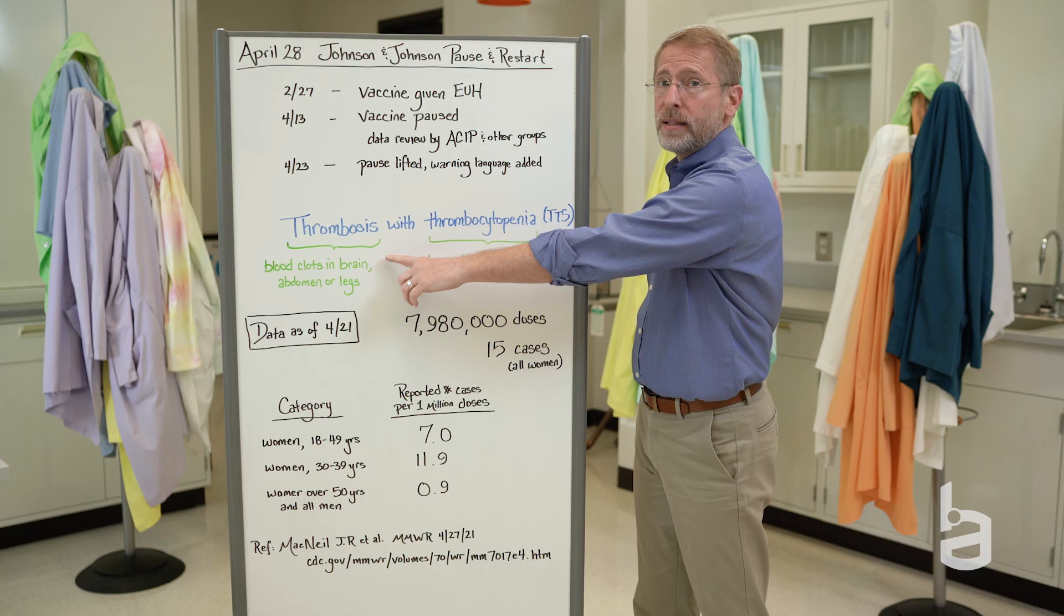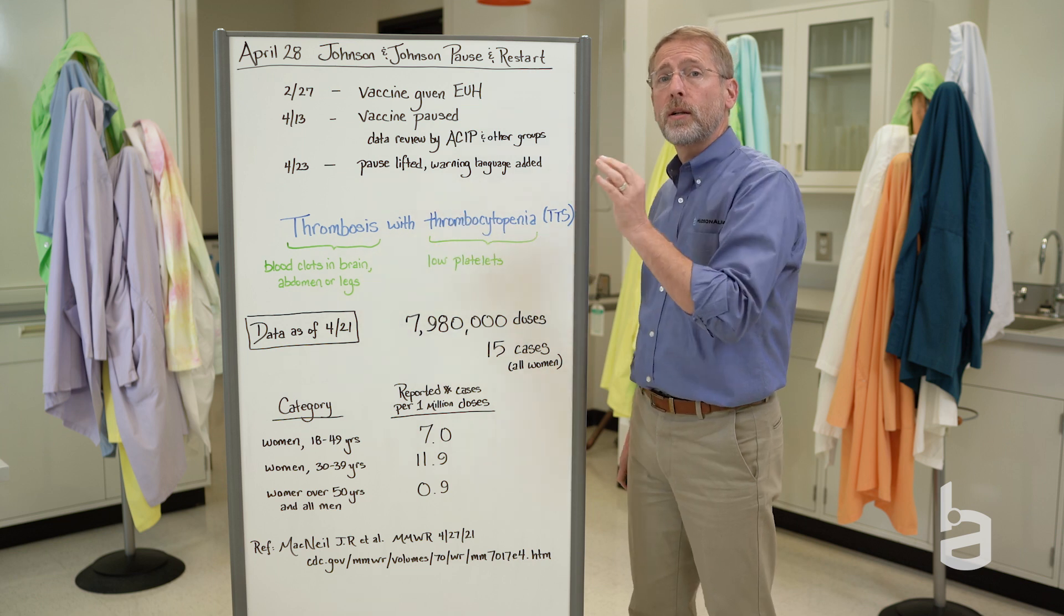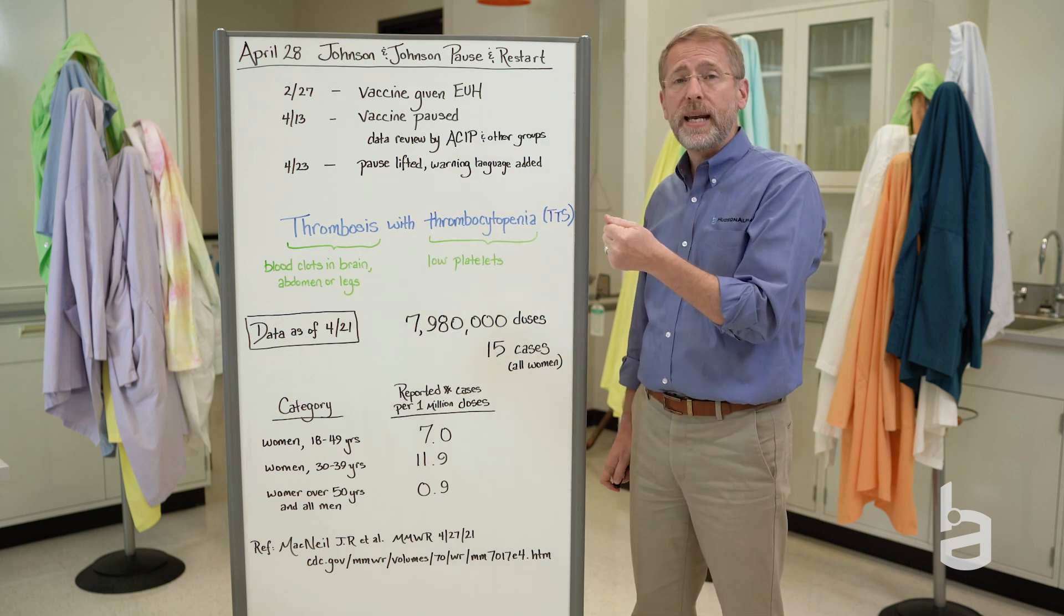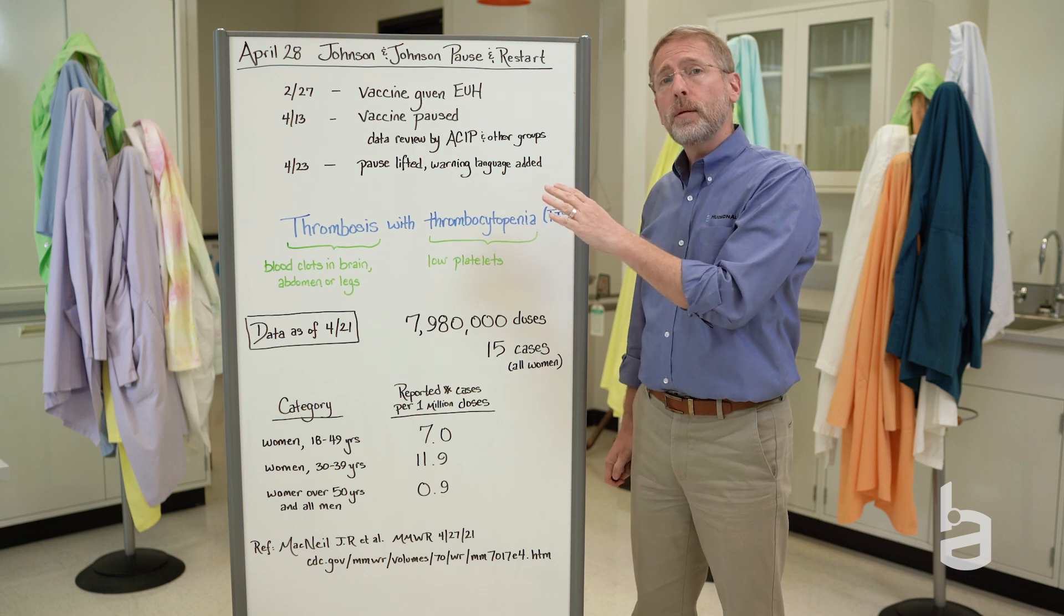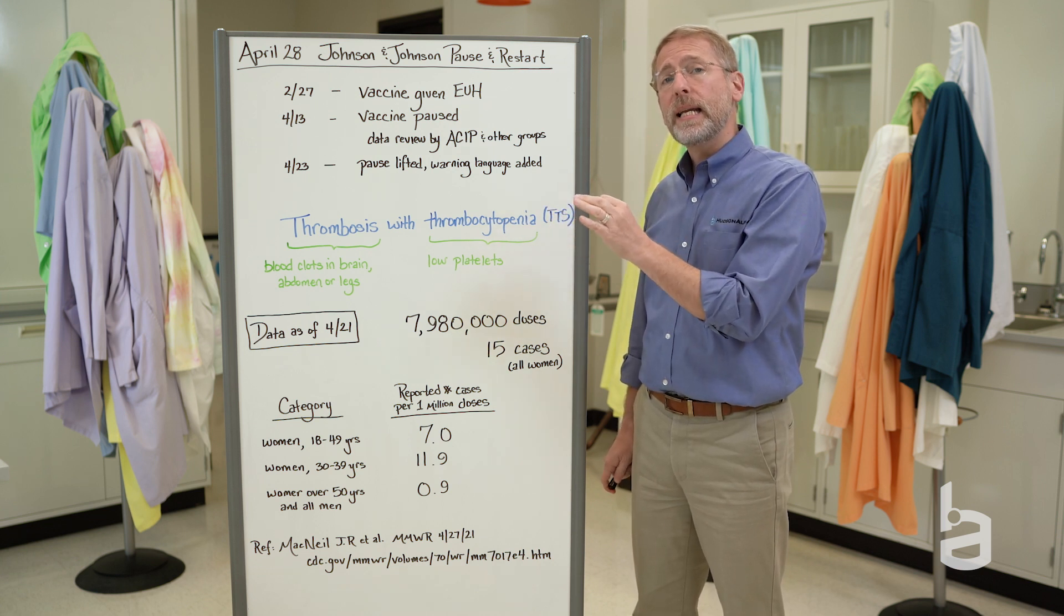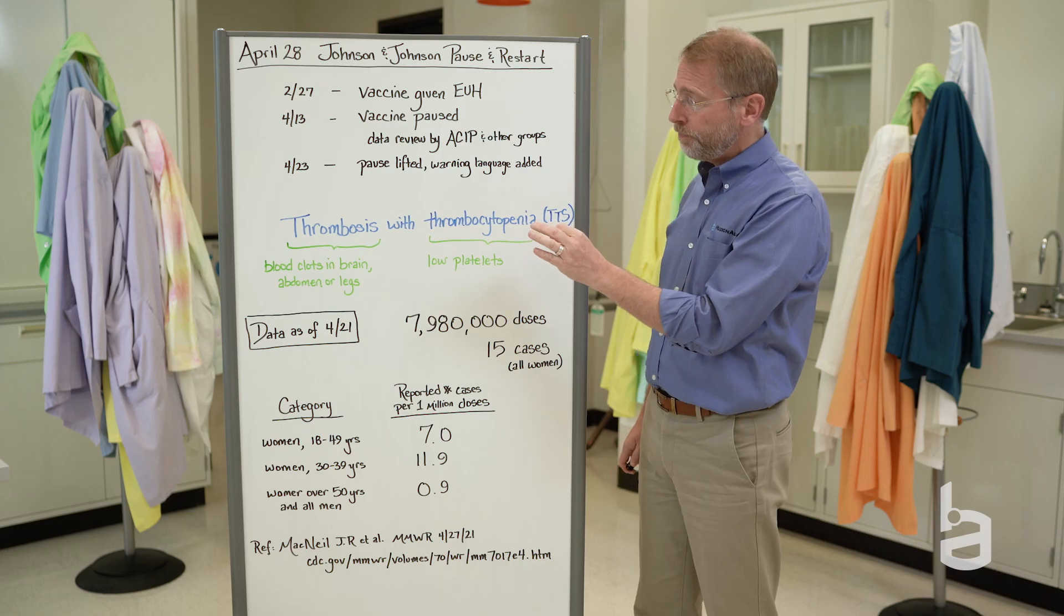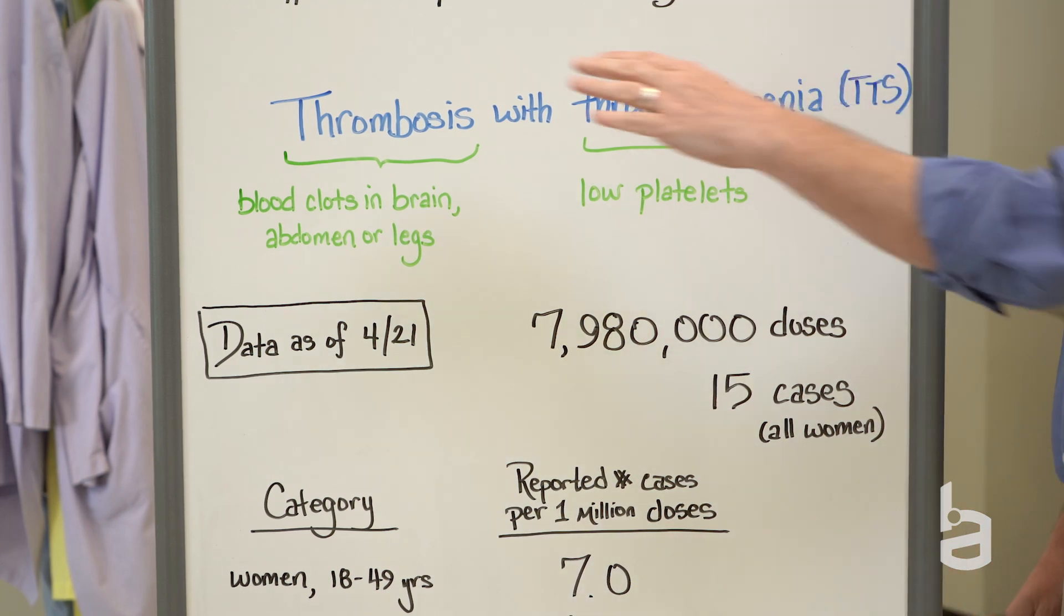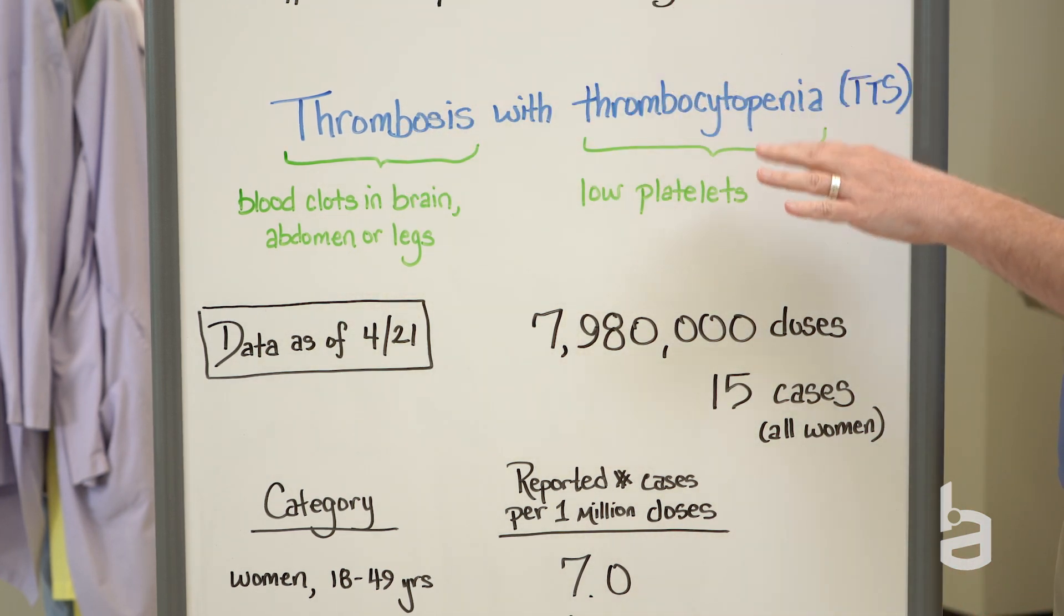Thrombosis, these are blood clots. These are fairly large blood clots in large vessels, arteries and veins, many of them in the brain, but also in the legs and in the abdomen as well. And then thrombocytopenia, this is a really low level of platelets. So clots, but also a lack of some of the systems that provide clotting.